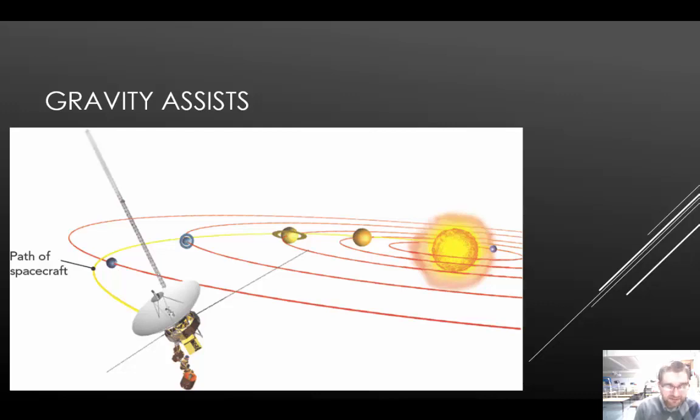The diagram that we see here shows how Voyager 2 used gravity to assist and visit other planets. Each time that probe passed a different planet, the gravity of that planet was used to speed it up.